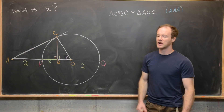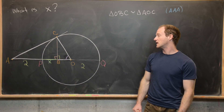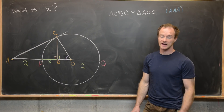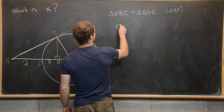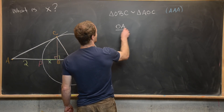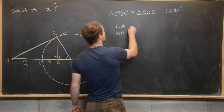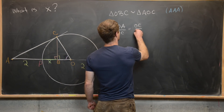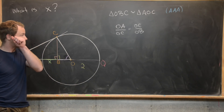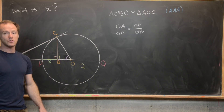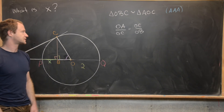Now that they're similar triangles, we can set up a nice proportion in terms of the lengths of their sides. The proportion I want to set up is: OA over OC equals OC over OB. We know most of those measurements, and the one we don't know involves our goal x — so that's really nice.